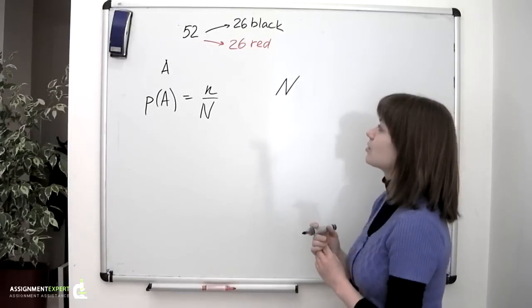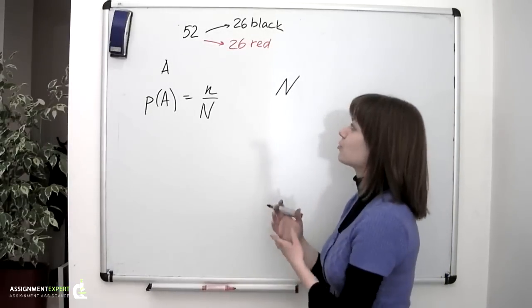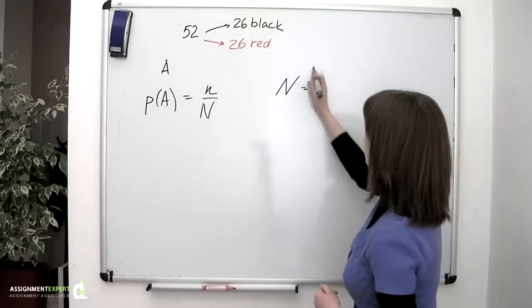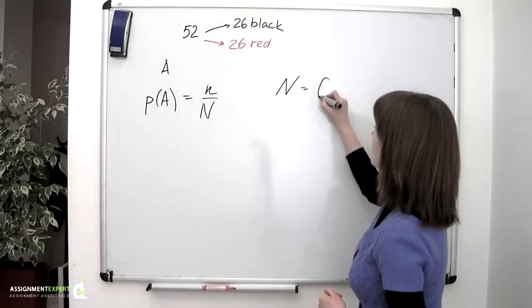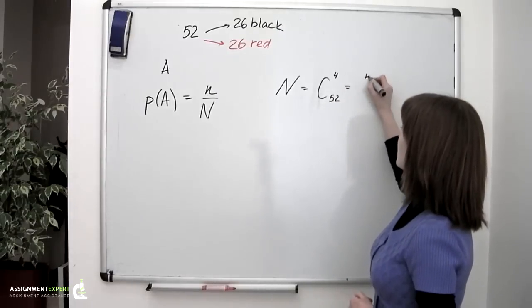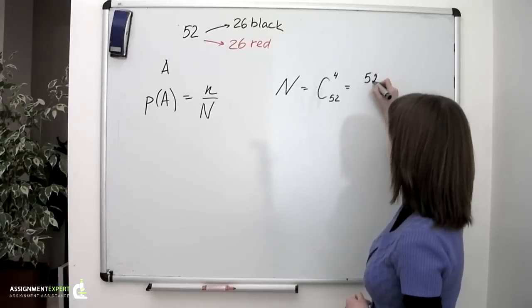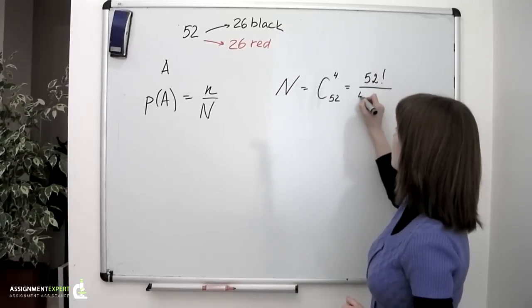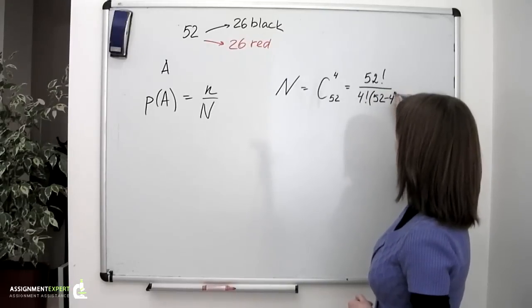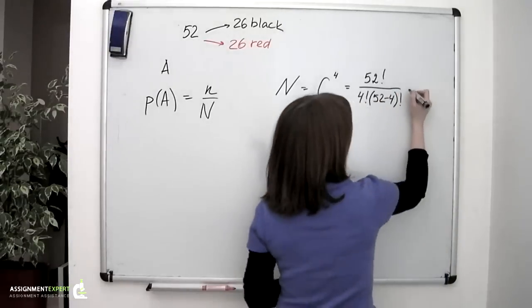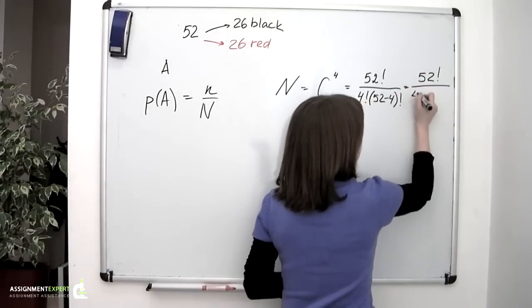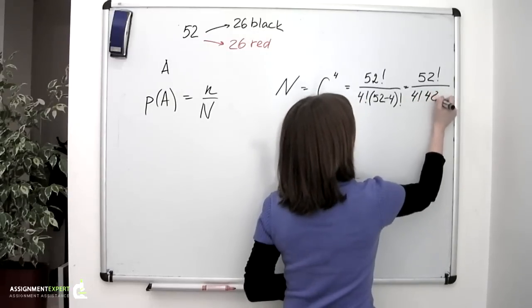And as long as the order in which to pick these four cards doesn't matter, it is calculated as the combination, capital C, the combination of four cards out of 52, which is calculated as follows: 52 factorial divided by 4 factorial times 52 minus 4 factorial, or 4 factorial times 48 factorial.